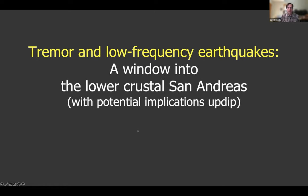Now I'll shift gears and talk about my own experience working with data from the Parkfield area — in particular looking at the really interesting tremor and low frequency earthquake source within the lower crust of the San Andreas. Even though our resolution is still limited, we can see a lot that we couldn't see before looking at these signals. This is one of the few semi-direct ways we have to see what's happening in the lower crust, and we can expect interactions between what the fault is doing in the lower crust and what it's doing in the upper crust.